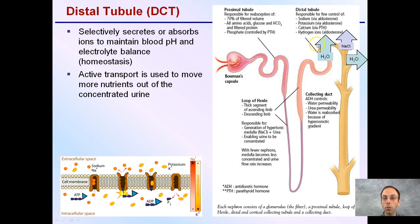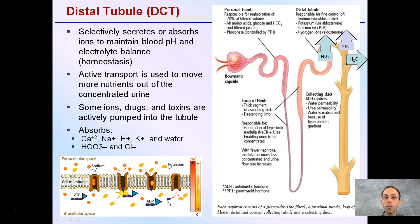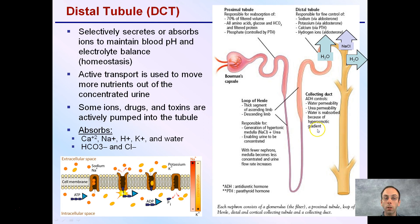Continuing on to the distal tubule, it selectively secretes or absorbs ions to maintain blood pH and electrolyte balance — this is homeostasis. We can absorb or secrete depending on what the body needs. Active transport is used to move nutrients out of the concentrated urine, as we get very close to producing our end product, urine. Some ions, drugs, and toxins are actively pumped into the tubule for excretion from the body.